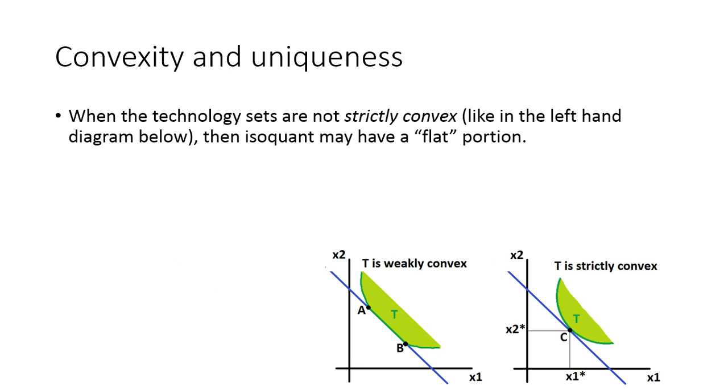Okay, so now that we understand what strict convexity is, let's talk about how this is related to the uniqueness of the cost-minimizing solution. So when the technology sets are not strictly convex, for example in this left-hand diagram here, there's a flat portion of this isoquant right there. So that's not a strictly convex set anymore, this region T, which keeps going really up farther into the right. This right-hand diagram though, the set T here is definitely strictly convex.